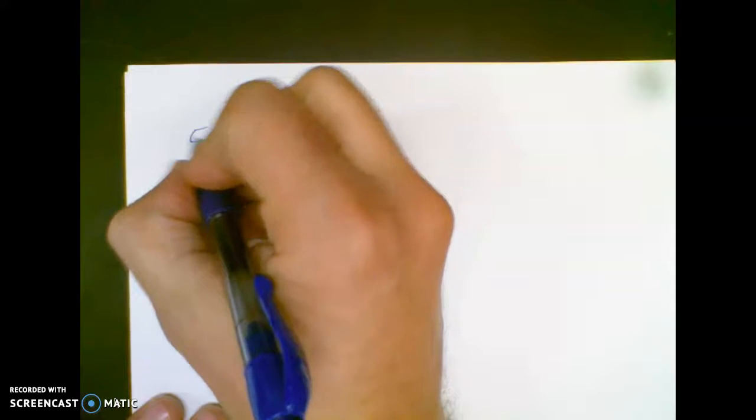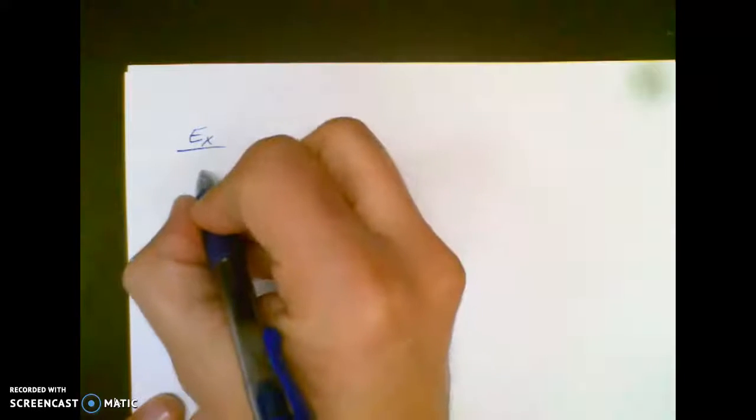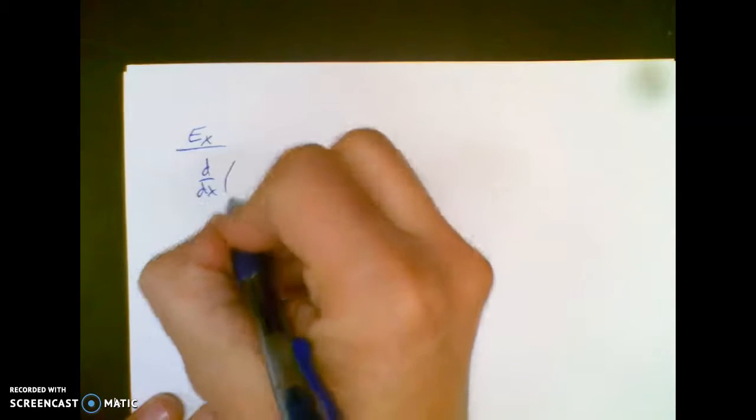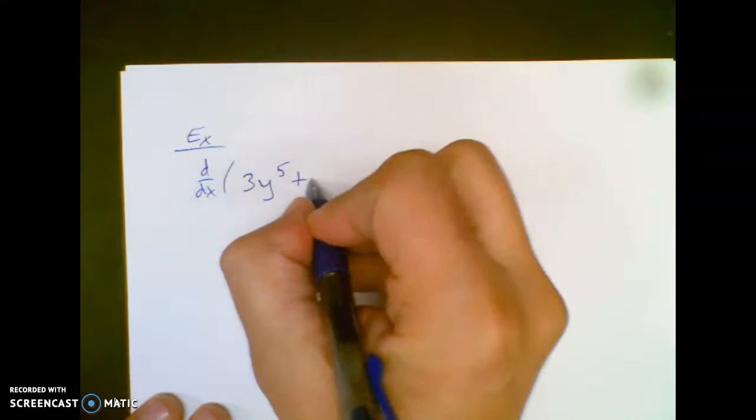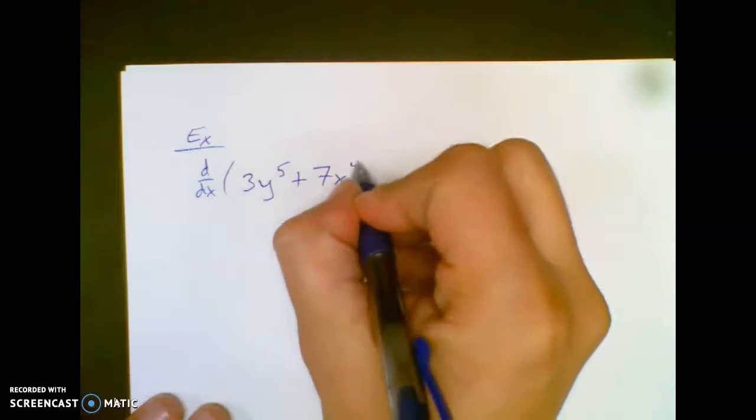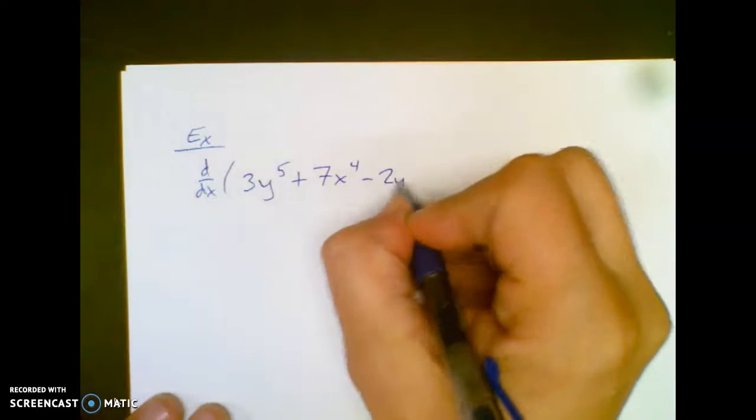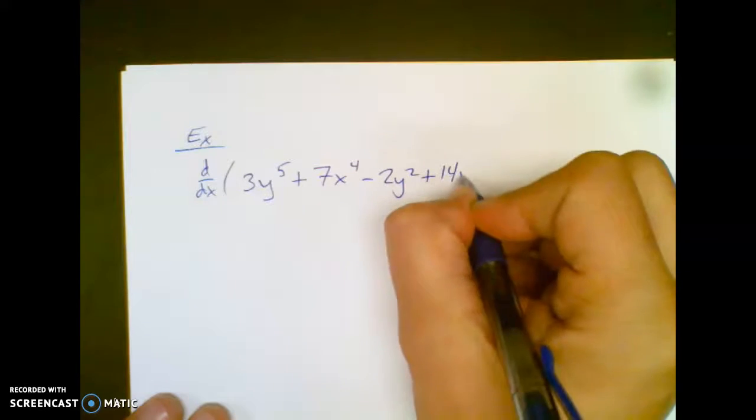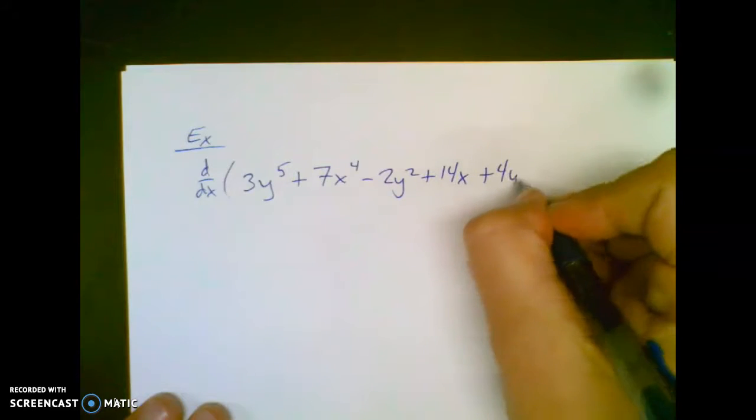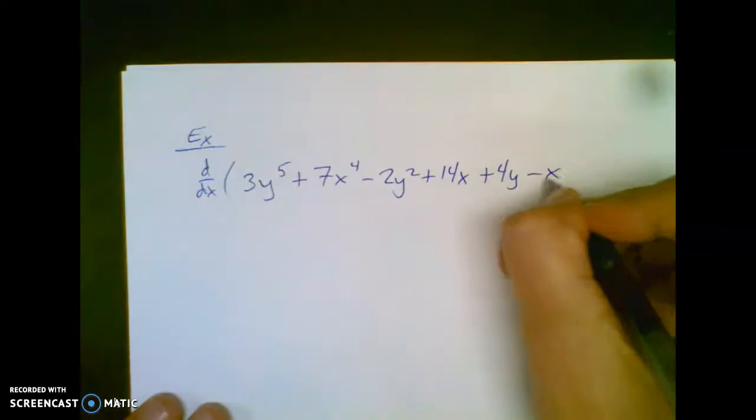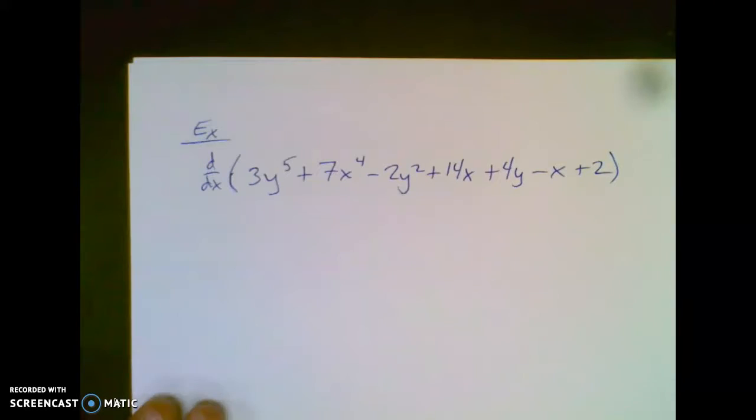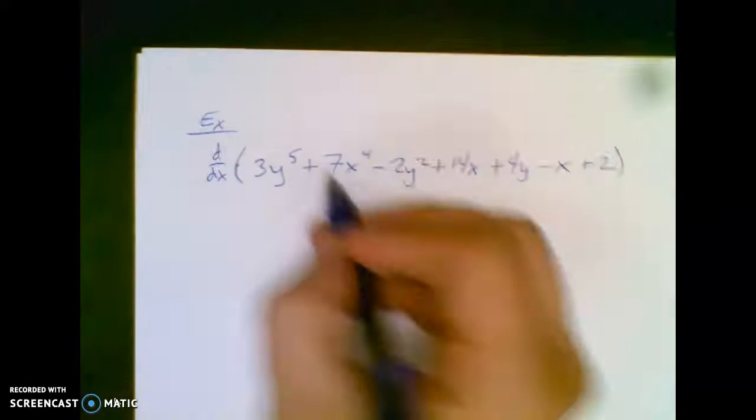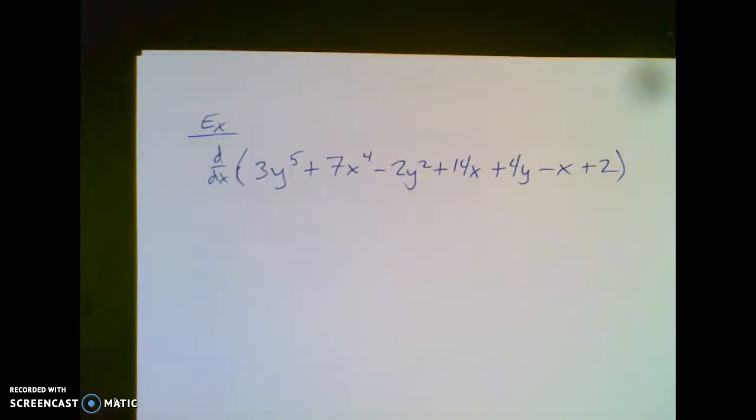All right. So another example would be try to take the derivative with respect to x of this monstrosity: 3y⁵ + 7x⁴ - 2y² + 14x + 4y - x + 2. I want to see if you can do that. Go ahead and pause it and try it out. See if you got it right.